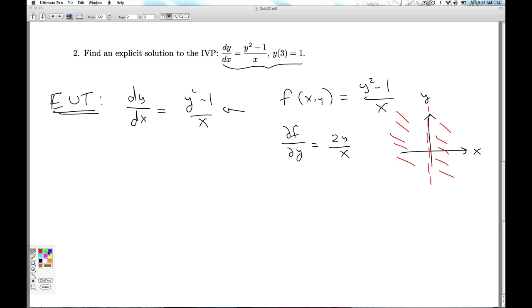But as long as x isn't zero, I should be able to find a unique solution around any point, including the point here, which is three, one. I've got a nice open rectangle around there. I should be able to find a solution.